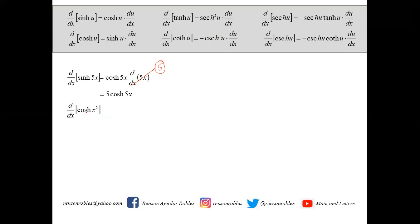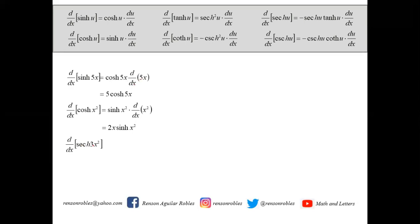Another example: differentiate cosh(x²). The derivative of x² is 2x, and the derivative of cosh is sinh, so we get 2x·sinh(x²). For the derivative of sech(3x²): since sech is a reciprocal function, we affix the minus sign. The derivative of 3x² is 6x, giving -6x·sech(3x²)·tanh(3x²).